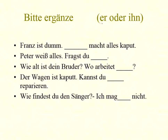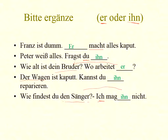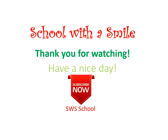Now let's see whether we fill it as a subject or object. 'Franz ist doof' — 'ihn' in the beginning. 'Er mag das kaputt.' 'Peter weiß alles' — when it's object, it's 'ihn.' 'Wer arbeitet?' — subject is already there, no subject needed; add 'er.' 'Der Wagen ist kaputt' — article for 'Wagen' is 'der,' so it's 'ihn.' That is simple! If you have any doubts or concerns, you can write to me. Thank you very much for today's lesson. Have a nice day!